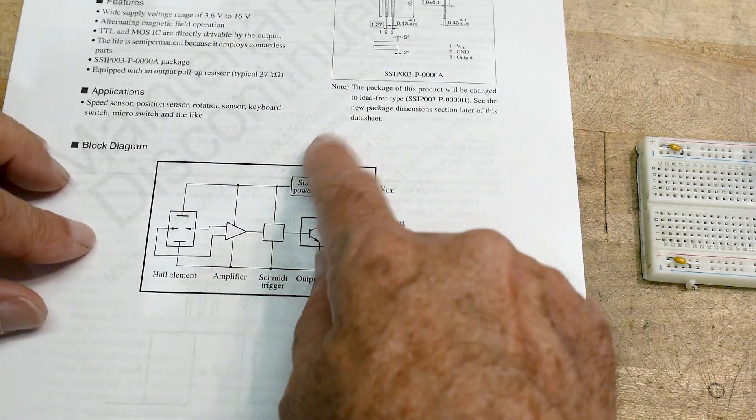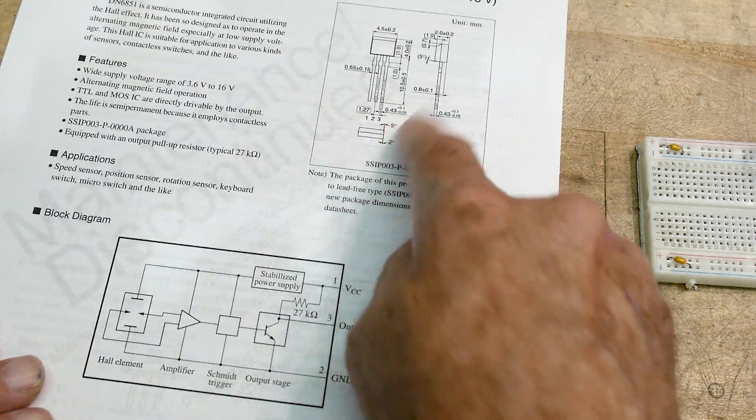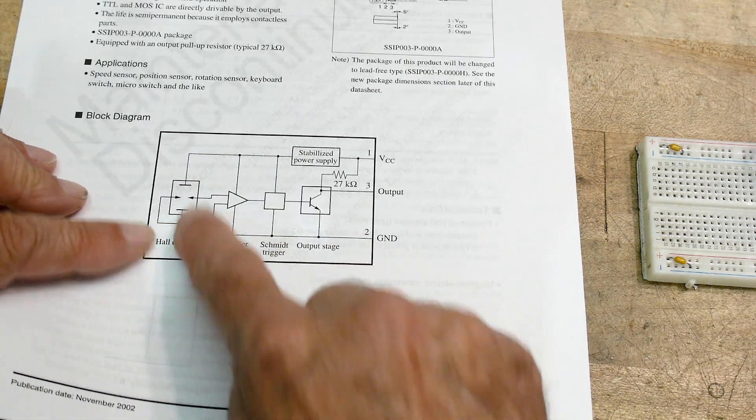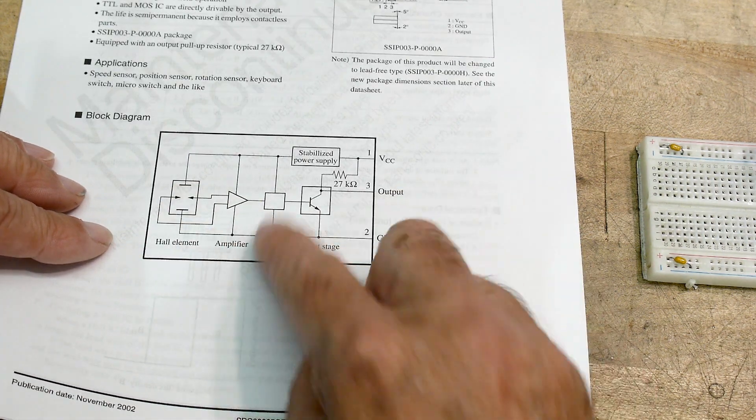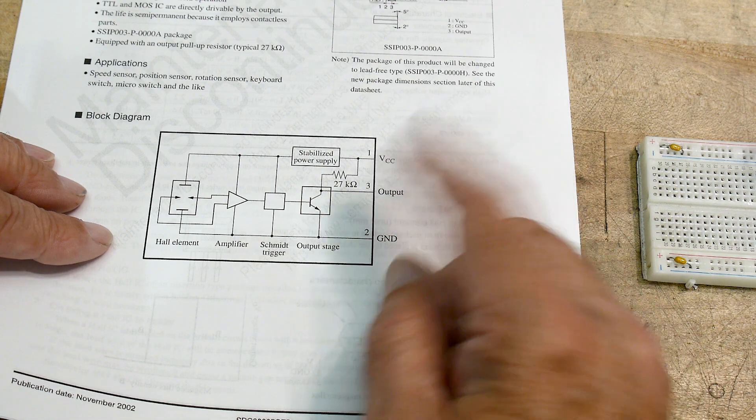This is what it looks like. It's a little three pin package. Looks like a little transistor. But it has a Hall element and then an amplifier, Schmidt trigger and then an output. The output is nice.